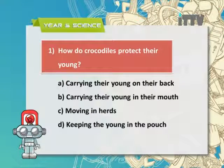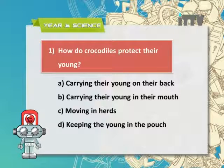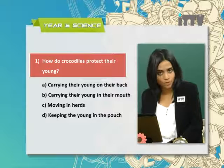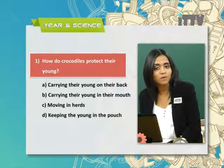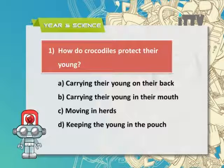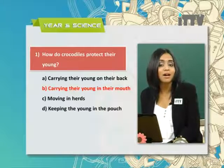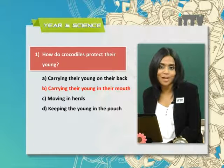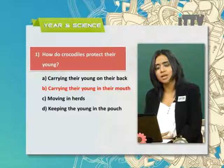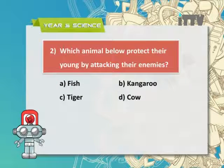Question one: How do crocodiles protect their young? A — carrying their young on their back; B — carrying their young in their mouth; C — moving in herds; D — keeping the young in the pouch. Kangaroos keep young in the pouch, and elephants and buffaloes move in herds. The correct answer is B — carrying their young in their mouth.